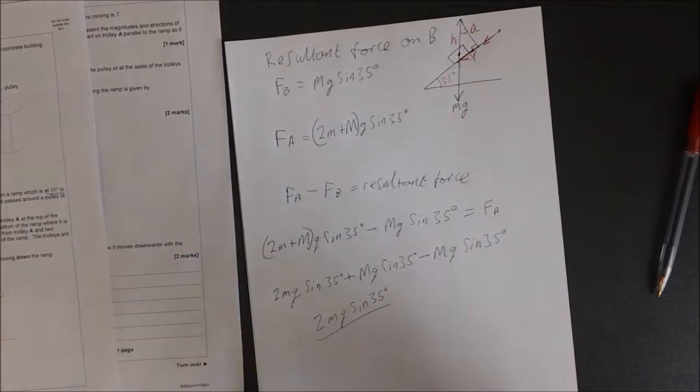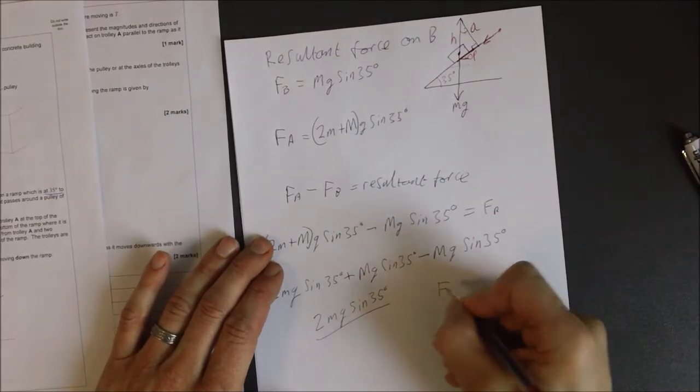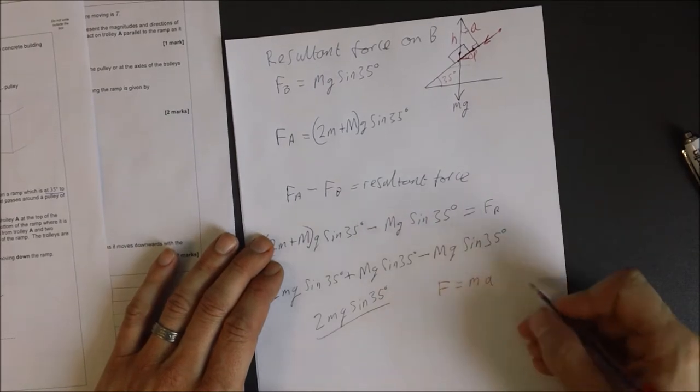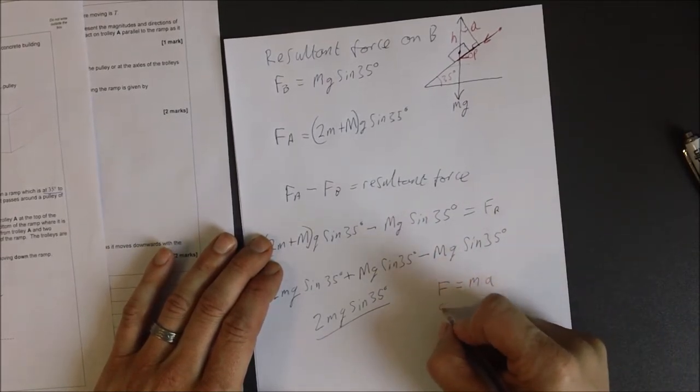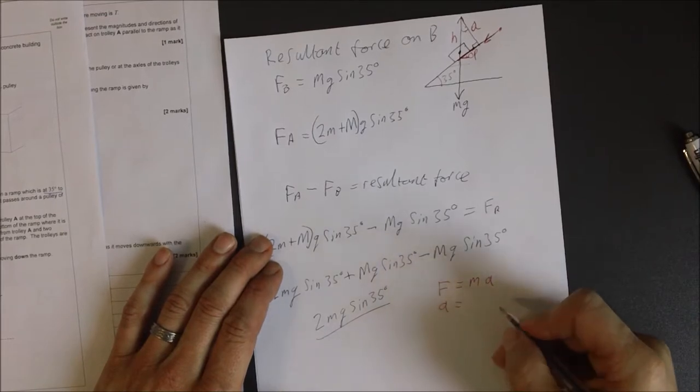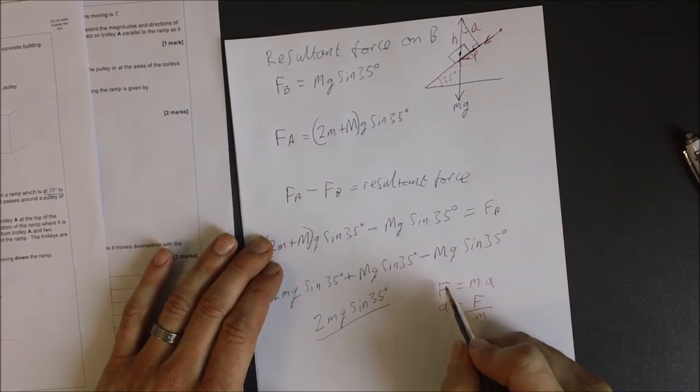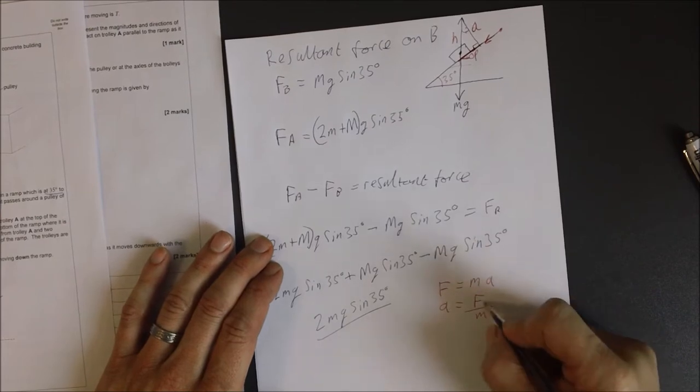So let's go back and let's put that into our equation of F equals MA. We're trying to find the acceleration. So all we're actually doing here is we're saying that acceleration equals force divided by mass. Let's say here, resultant force divided by total mass.